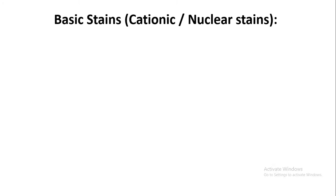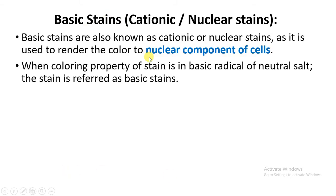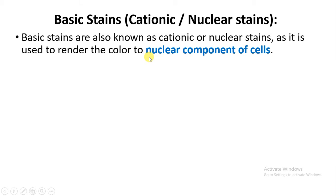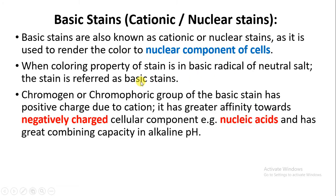Hello students and welcome. Today we are going to study a new topic: the basic stain, or you can say cationic or nuclear stain. These are stains which are also called cationic or nuclear stains because they give coloration to the nuclear component present in the cell. This stain has a basic radical, due to which it is also called a basic stain.